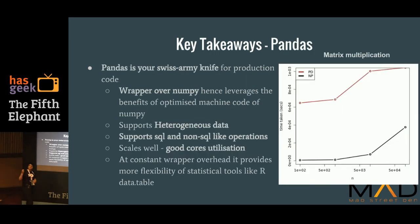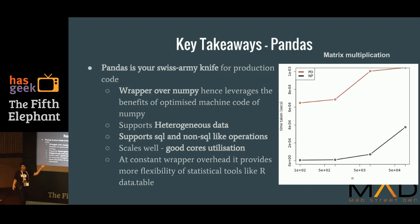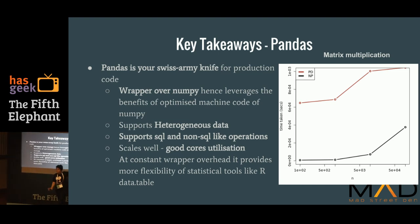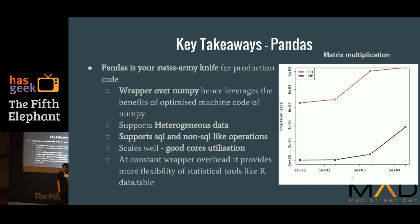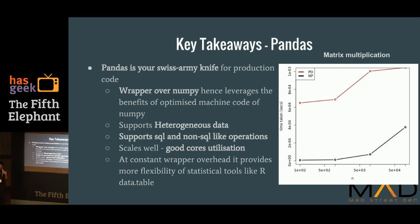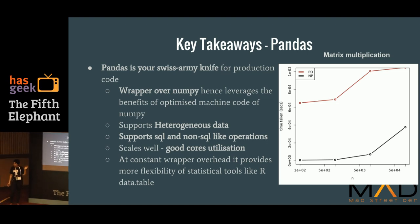When should you consider pandas? Consider pandas as your Swiss Army knife — it's a wrapper over NumPy but it gives you so much more. It lets you work with heterogeneous data and gives you SQL and non-SQL-like operations. But it's a bit of a trade-off because you have the wrapper overhead, as you can see from the constant overhead in matrix multiplication. You get a lot more functionality but you lose a bit on the speed. If you're working on a production product, you might want to go with pandas because it gives you so much more.